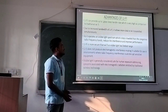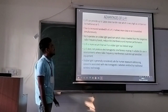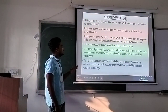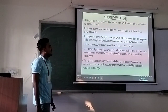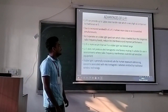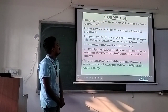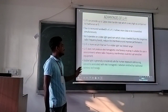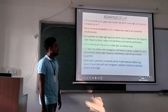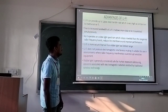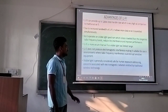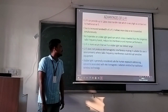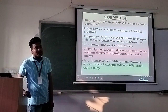What are the advantages of LiFi over WiFi? LiFi can provide very high data transfer rates compared to traditional WiFi. Due to increased bandwidth, it allows more data to be transmitted simultaneously. As it operates on the visual light spectrum, it uses less congested bandwidth than the radio frequency band, reducing interference and improving performance. LiFi is more secure than WiFi since visible light cannot pass through walls. LiFi does not produce electromagnetic interference, making it suitable for use in environments where radio frequency could disturb sensitive equipment like aircraft and hospitals. Visible light is also generally considered safe for human exposure, unlike electromagnetic radiation from traditional WiFi.